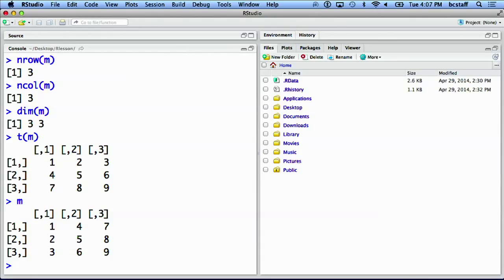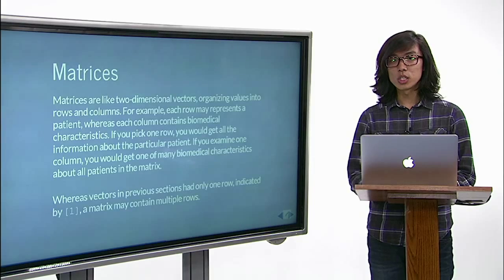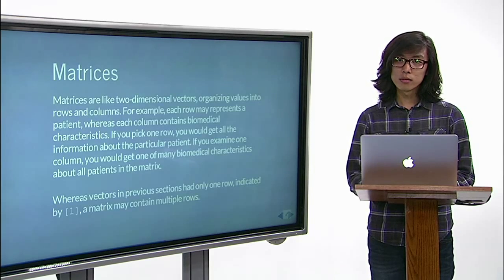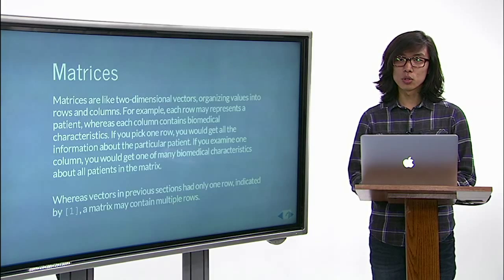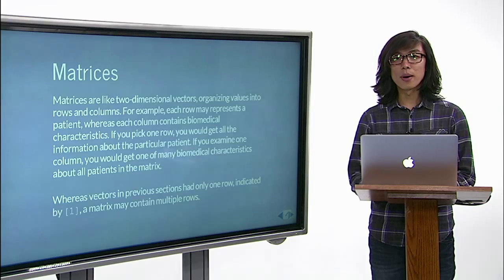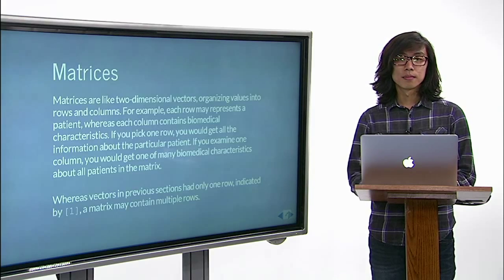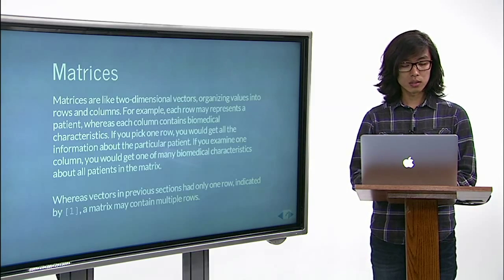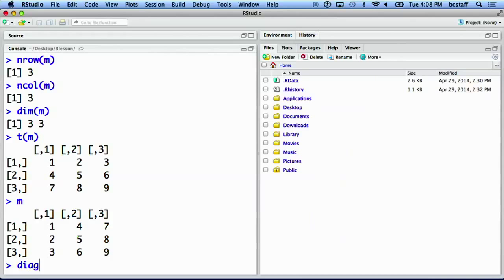Sometime in statistics, diagonal elements, which are located at row 1, column 1, row 2, column 2, and so on, may contain significant information about the data. Therefore, R provides a quick way to extract those values. Let's look at the diagonal elements of m using a function diag.